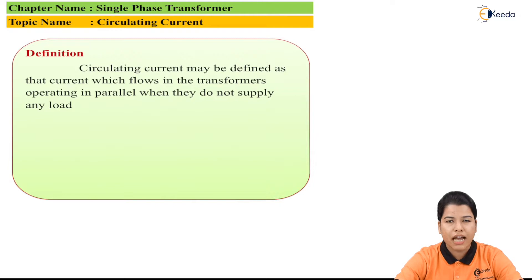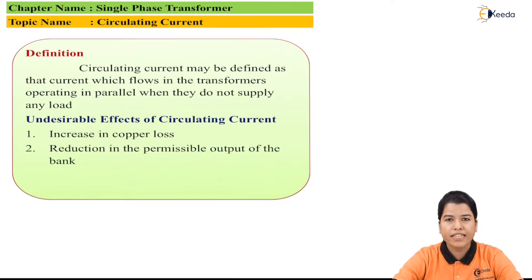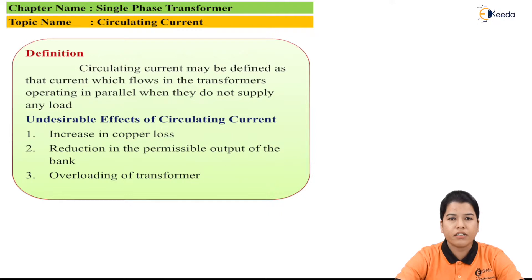This circulating current creates some undesirable effects. First is an increase in copper loss, second is a reduction in the permissible output of the bank, and third is overloading of the transformer.